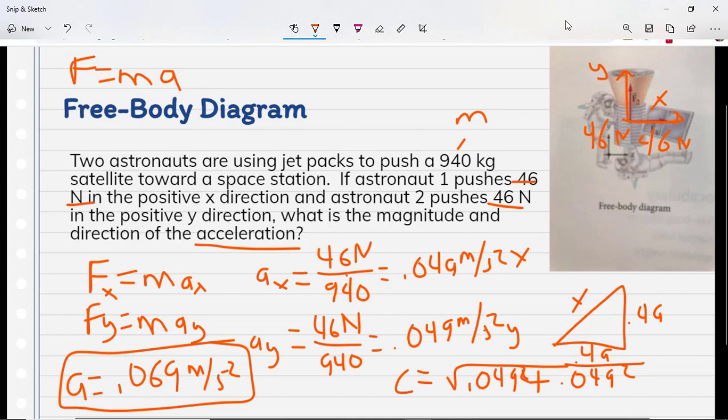So that's the magnitude of the acceleration. But what about the direction? Well, now that we know all of the different aspects of this triangle that we've got here, I can now plug in anything in order to get that angle. So if I take the inverse tangent, I can just use 0.49, or I'm sorry, 0.049.